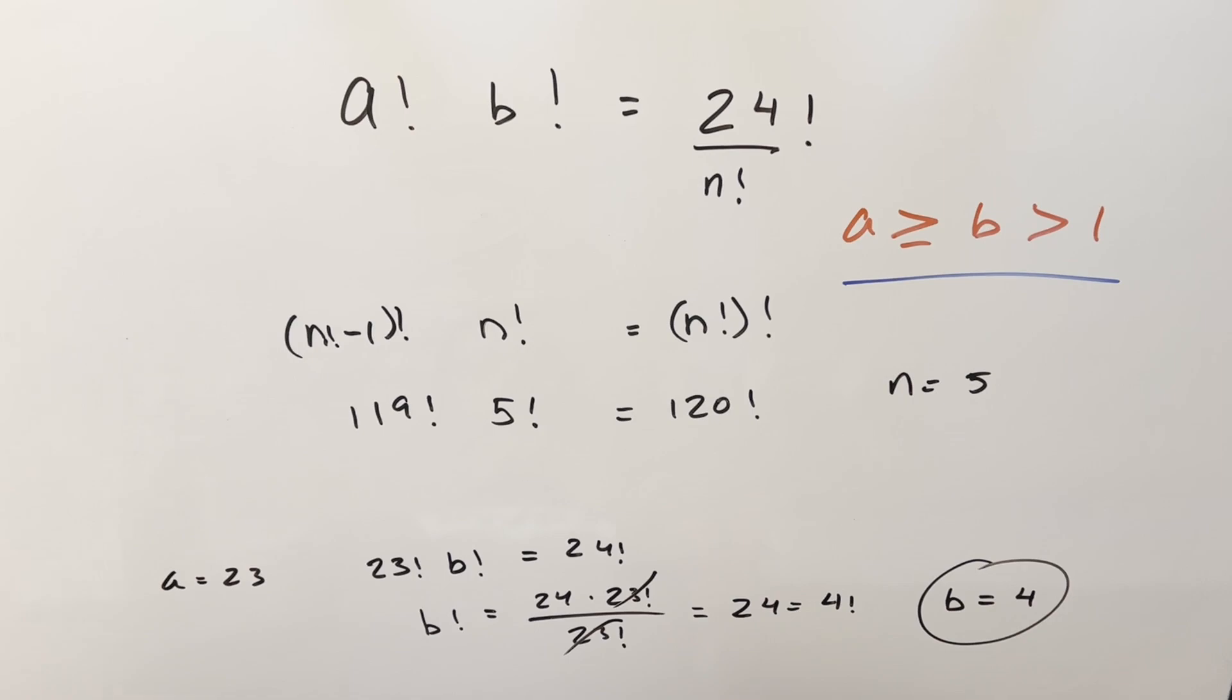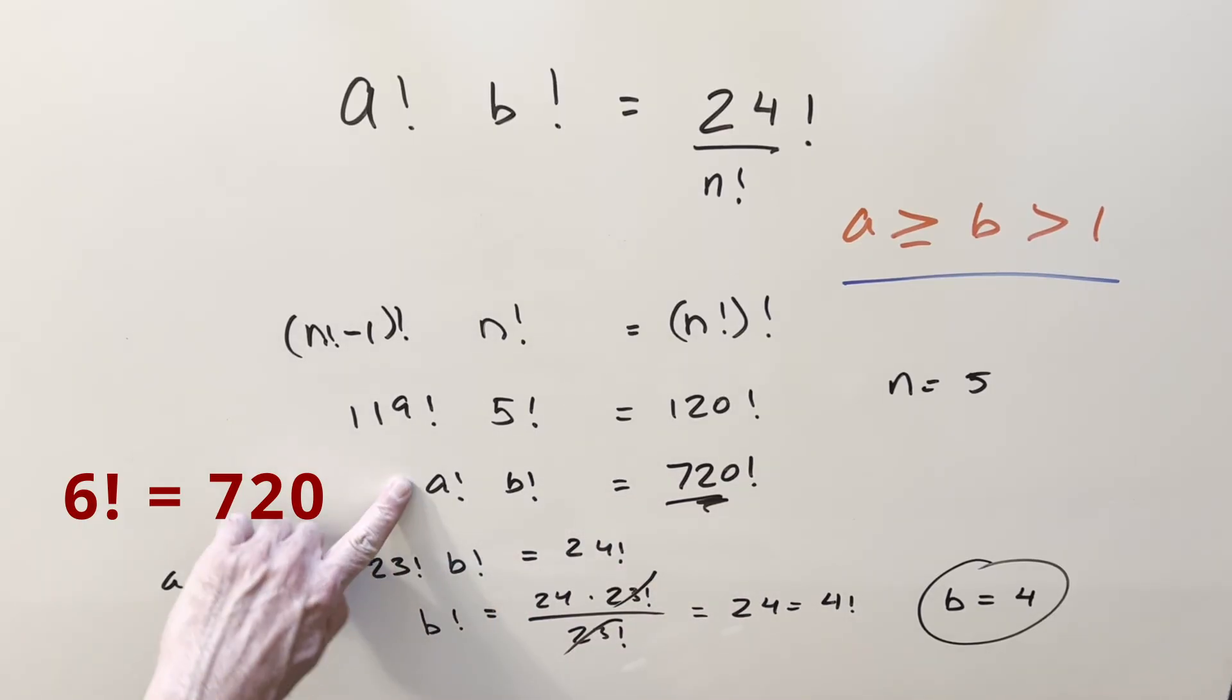So with this little formula here, it gives you an easy way to solve these as long as the key is this number has to be a factorial right here. So if you had a factorial times b factorial equals 720 factorial, this here is going to be 719, this here is going to be 6. And you could do it like that.